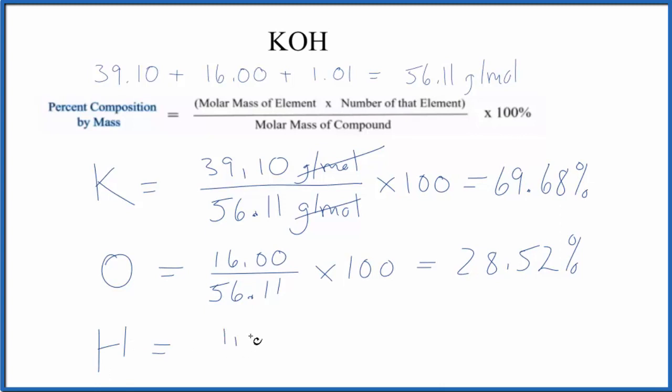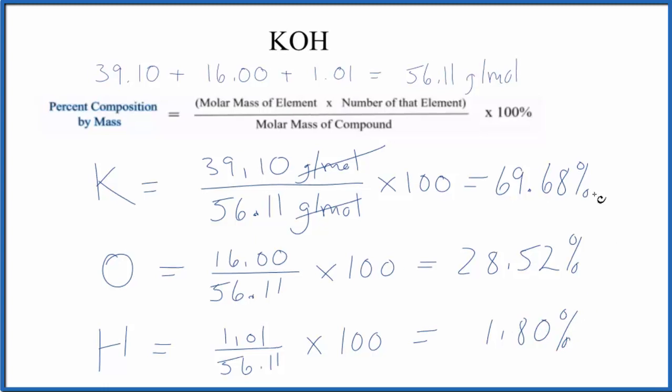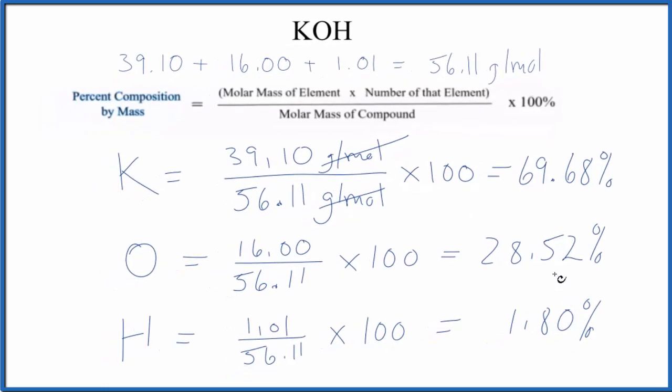1.01 over the molar mass of the compound times 100, and we get 1.80%. And these all should add up very close to 100, if not 100%. And that's how you find the percent composition by mass for each element here in KOH,